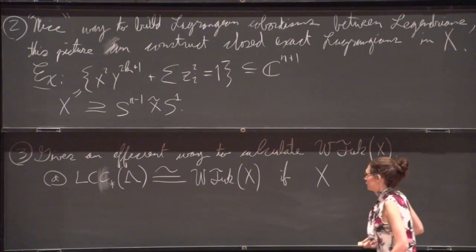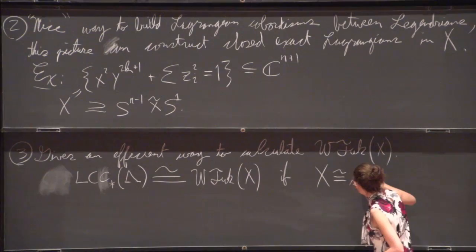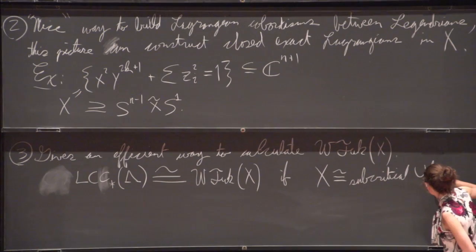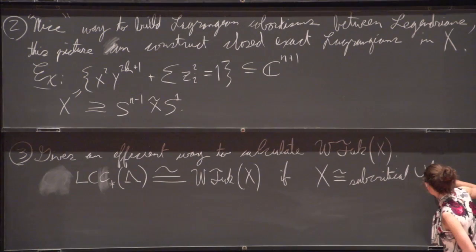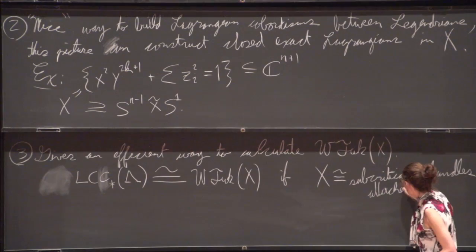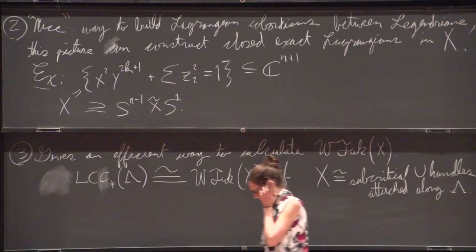If X is isomorphic to just a subcritical manifold union handles attached along the Legendrian lambda.